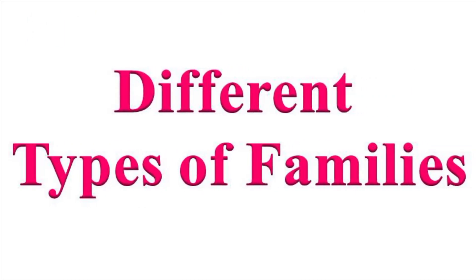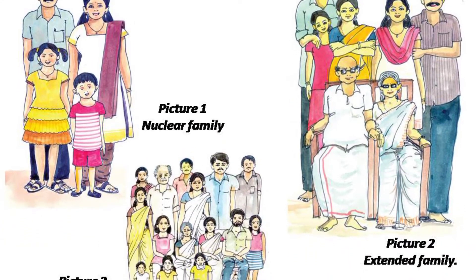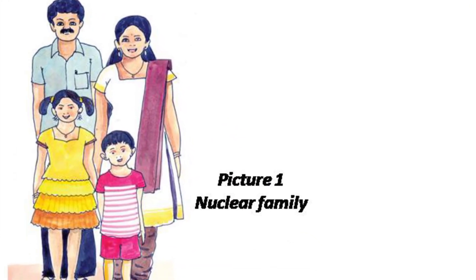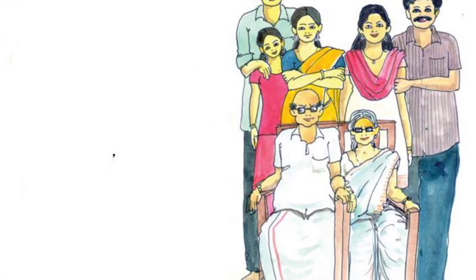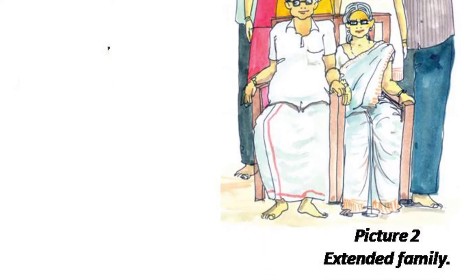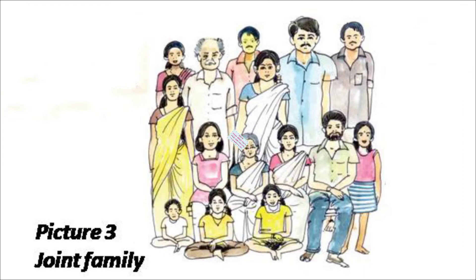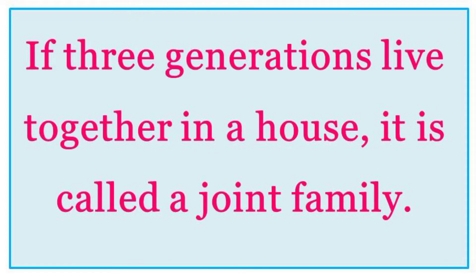There are different types of families. In the first picture, you can see only father, mother and their children — a family of this type is called a nuclear family. In picture 2, we can see grandparents, parents and children. When two or three nuclear families live together, they form an extended family. The family in the third picture is very large — three or four generations live together under one roof — it is called a joint family.